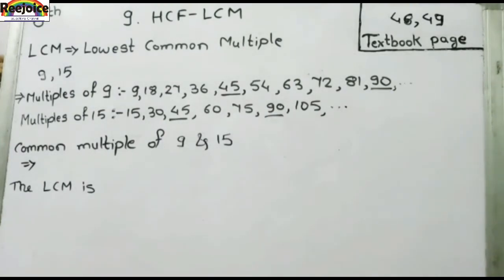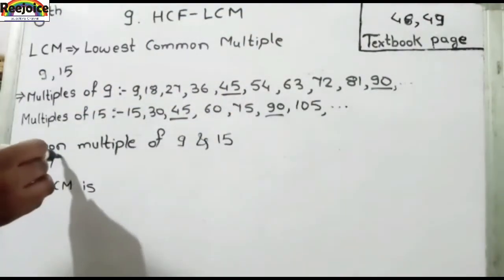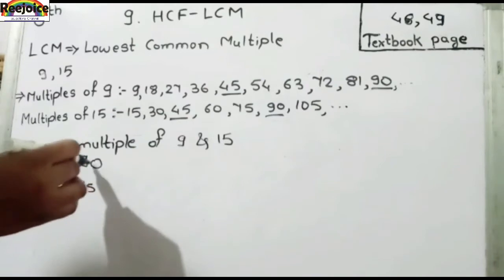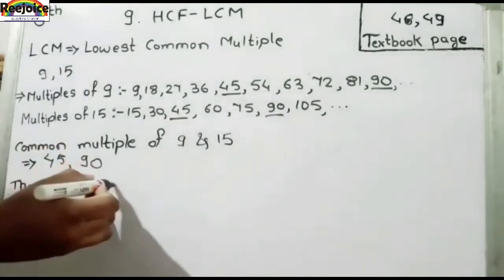Common multiples of 9 and 15 क्या आए हैं — 45 और 90। अभी दो numbers अपने को दिख रहे हैं जो list में common हैं। पर LCM का मतलब है lowest common multiple, मतलब जो सबसे कम common वाला multiple होगा। तो 45 और 90 में से सबसे छोटा कौन सा है — 45। तो answer आएगा 45।